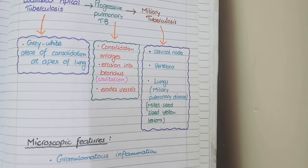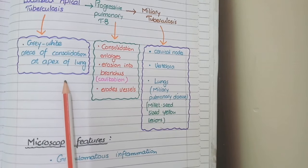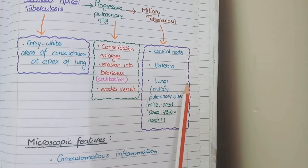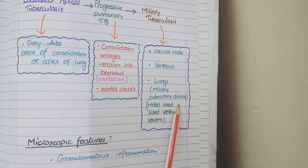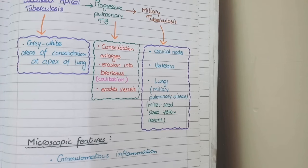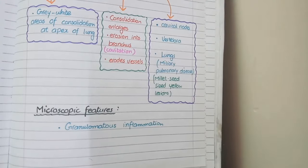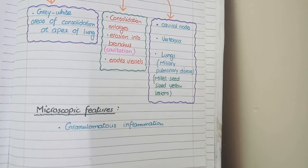So overall on gross specimen, there are either apical areas of consolidation, or there are areas of cavitation in progressive pulmonary tuberculosis, or there are millet seed sized lesions on lungs called miliary pulmonary disease. At last on microscopy, if you examine any of these three lesions, the characteristic feature will be the same, that is called granulomatous inflammation that we studied in primary tuberculosis.